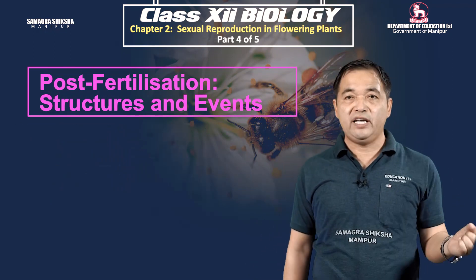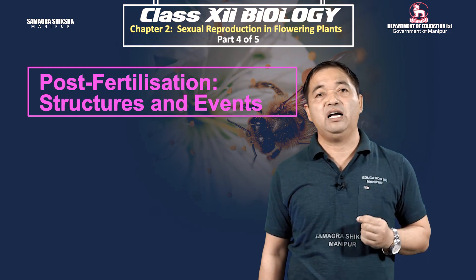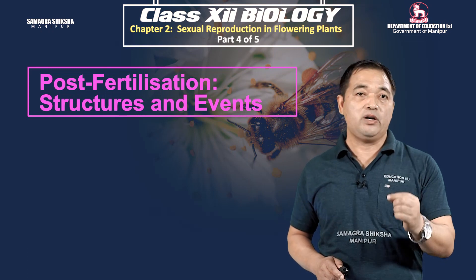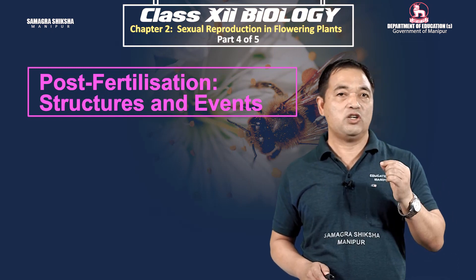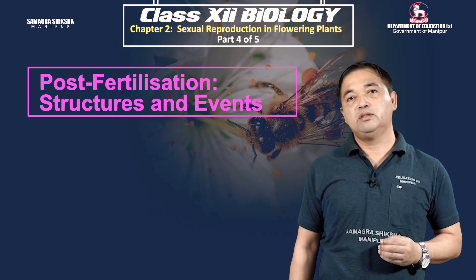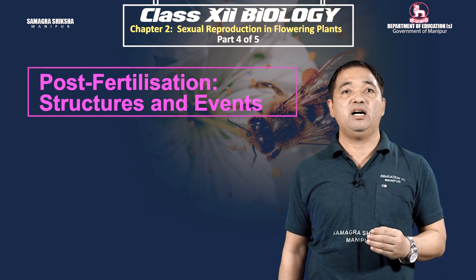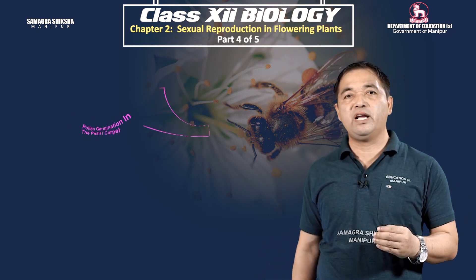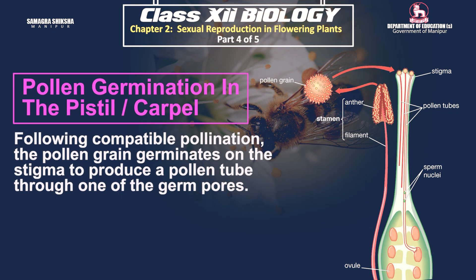Through this chemical dialogue, you can observe the pollen grains and pistils interacting. If pollen-pistil interaction is compatible in flowering plants, the pollen grains germinate. In the case of the stigma, pollen germination occurs and a pollen tube is produced.